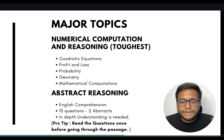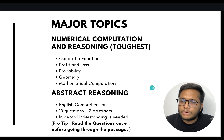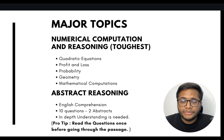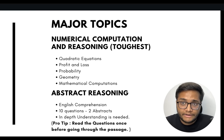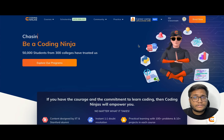The first section, numerical computation and reasoning, is the toughest. You'll have questions from quadratic equations, profit and loss, probability, geometry, and mathematical computations. Each question requires you to understand it and then do calculations — approximately five to six minutes per question. This is the most time-consuming and toughest section.